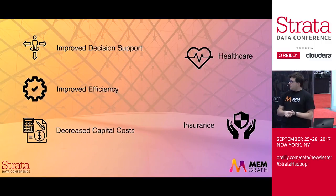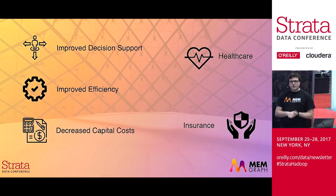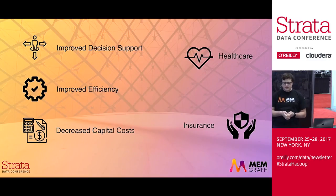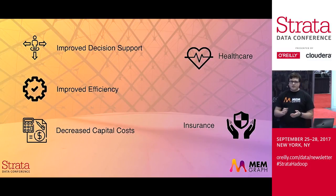Not only can you do data lineage and be compliant with regulations, but you can also have improved decision support — better managing and optimizing your processes, making your organization more efficient, which ultimately leads to decreased capital costs. One bank saved $2 billion by implementing a data lineage system and improving their internal processes. And it's not the only use case — data lineage can also be used in insurance and healthcare. As part of graph databases, there are many more use cases that graph databases can support.